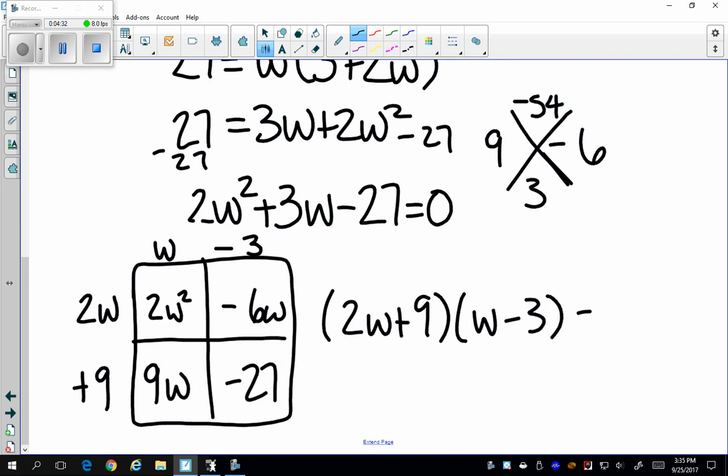Setting each of these equal to 0, I get w equals negative 9 halves and w equals 3. Now I know it can't be a negative number, so I'm immediately going to cross that out. So I get that my width is equal to 3 meters. And that's my final answer.